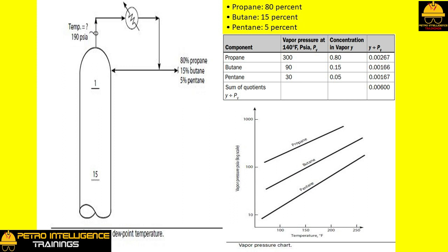However, assuming a normal non-flooded condition, we will guess that the tower top temperature is 140 degrees Fahrenheit. Using the vapor pressure curves provided in picture, we would calculate as follows according to dew point equation: the sum of the quotient of y divided by PV ought to equal 1 divided by PT. 0.00600 is equal to 1 divided by PT, solving for PT.